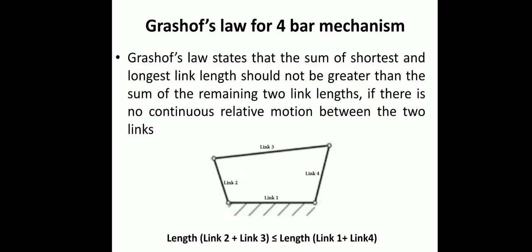For determining whether a chain is useful or convertible to a mechanism, we must follow a law known as Grashoff's law. If this is satisfied, then we can change or invert any kinematic chain into a mechanism. Grashoff's law states that the sum of the shortest and longest links should not be greater than the sum of the remaining two links.